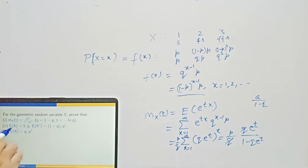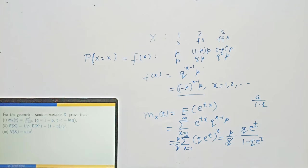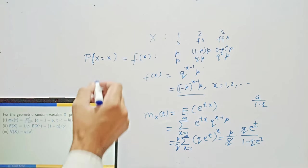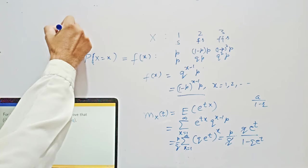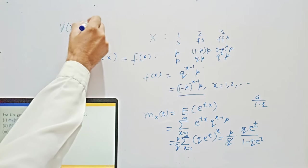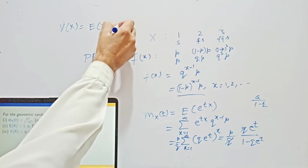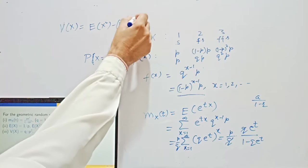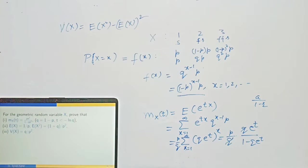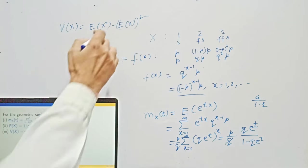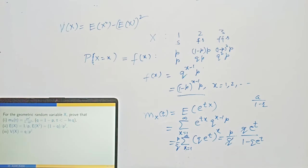By definition you can prove that E[X] = 1/P and E[X²] = (1+Q)/P². For variance, recall that Var(X) = E[X²] - (E[X])². Using these values, you can simplify to get Var(X) = Q/P².